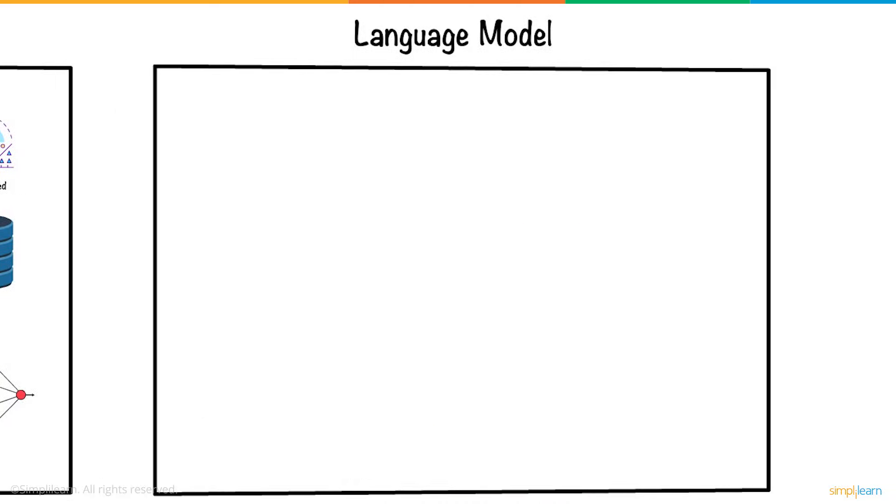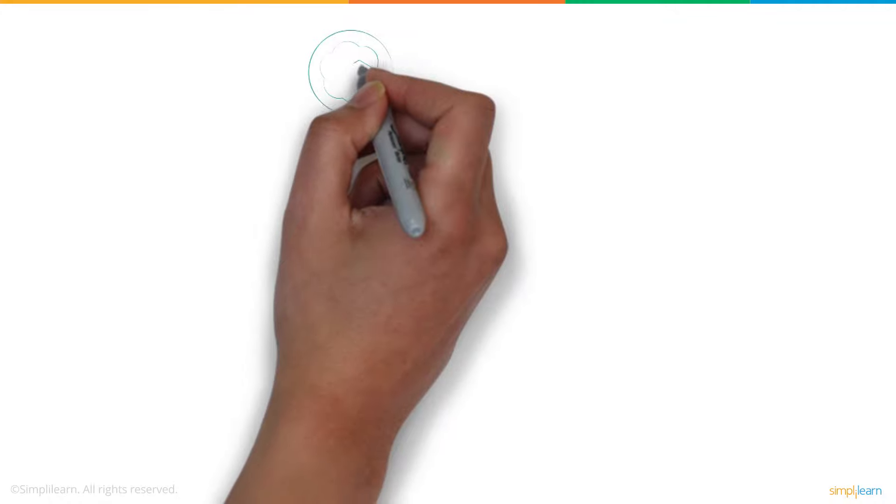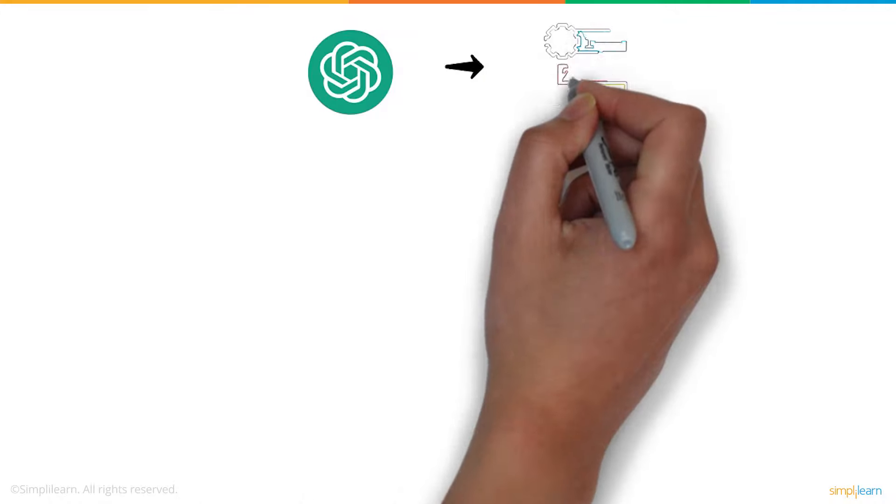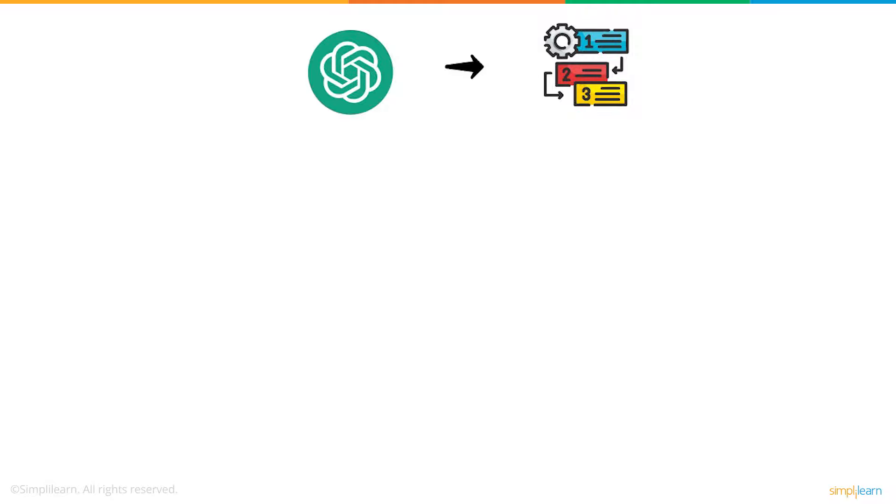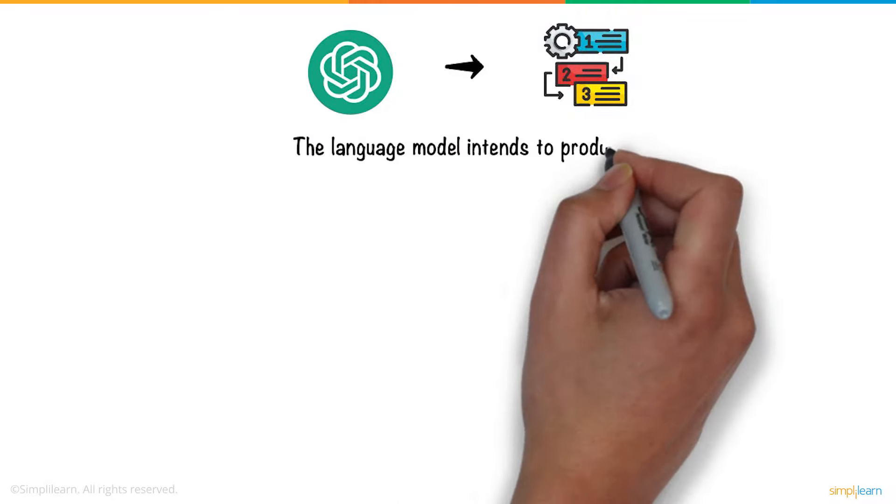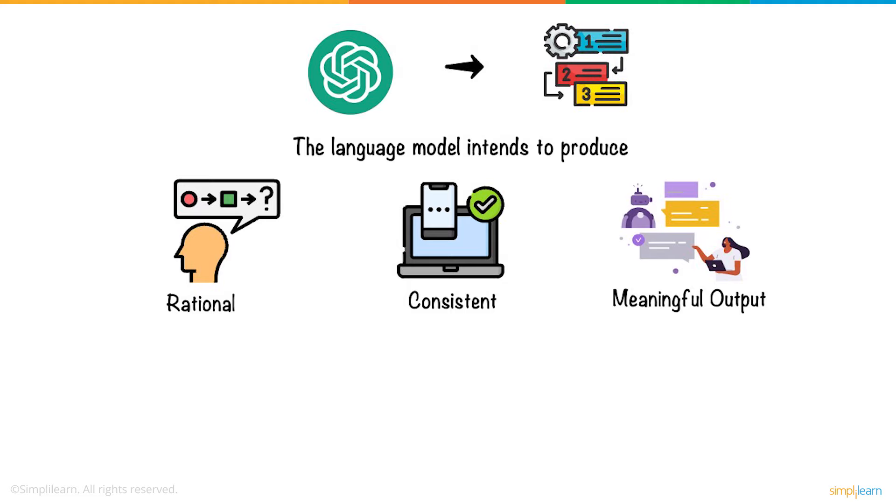Then comes the language model. ChatGPT is trained as a language model to predict the next word in a sequence given the previous words. The language model intends to produce rational, consistent, and meaningful output.